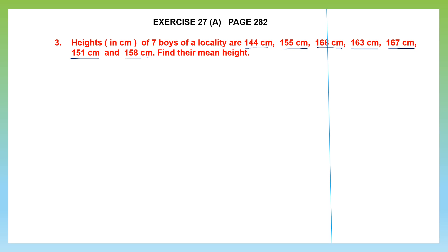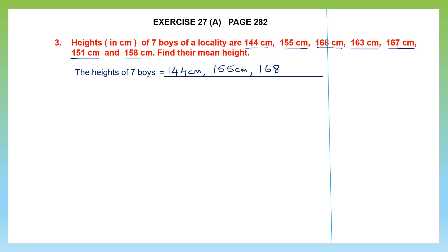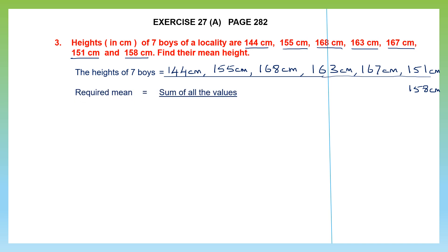Now we have to find their mean height. The heights given to us are 144 cm, 155 cm, 163 cm, 167 cm, 151 cm, and 158 cm. The required mean is the sum of all these values divided by the number of values, so we have to add up all these now.